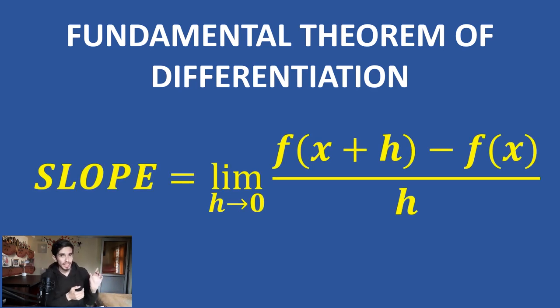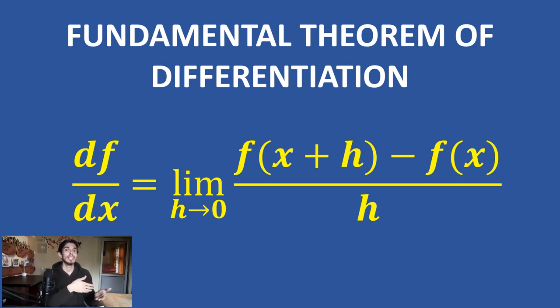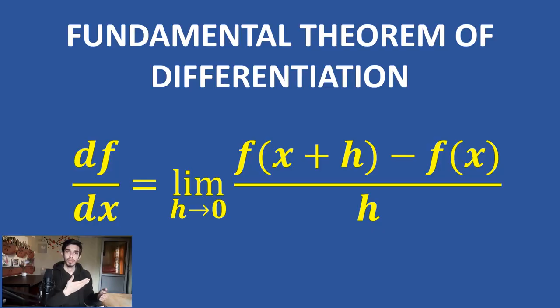What you are seeing right now is the derivative of f — our function — which is written as dy by dx. You can also write it as f-dash of x, or d of f(x) by dx. There are many ways to write differentiation. So, differentiation of a function with respect to x is defined as limit h approaches to 0, of f of x plus h minus f of x divided by h.